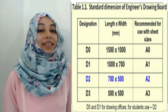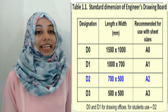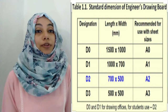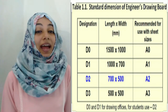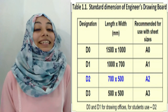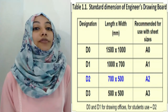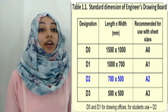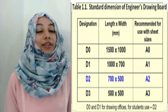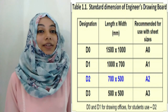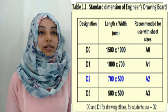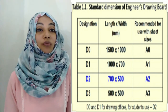In case of D0, length is 1500 mm and width is 1000 mm. For D1, length is 1000 mm and width is 700 mm. D2 is the drawing board that students are commonly using, with dimensions of length 700 mm and width 500 mm. D3 has a dimension of 500 by 500 mm — length and width are the same. The third column shows the corresponding drawing sheet for each board: D0 uses A0, D1 uses A1, D2 uses A2, so we are using A2 drawing sheet. D0 and D1 drawing boards are used for office drawings.